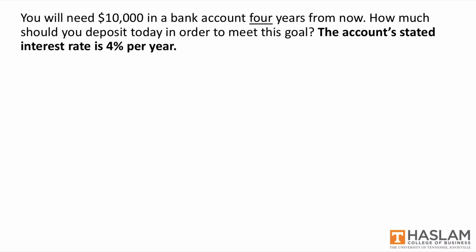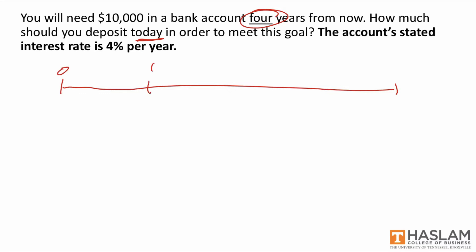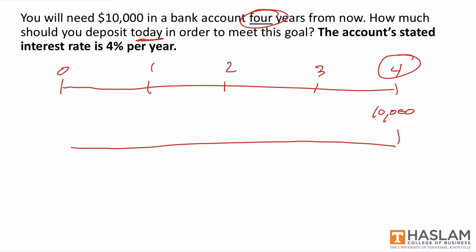Here's an example problem from a previous video. You'll need $10,000 in a bank account four years from now. How much should you deposit today in order to meet this goal? The account's stated interest rate is 4% per year. Recall that to solve this problem, we first drew a timeline. The only cash flow that shows up is the $10,000 cash flow that occurs in year four, and we are asked to find a time zero representation of that time four cash flow — in other words, we're asked to find the present value through discounting.